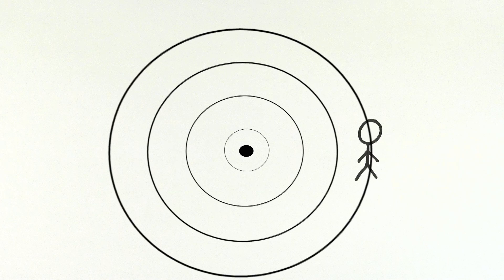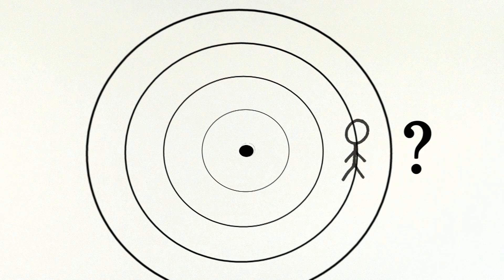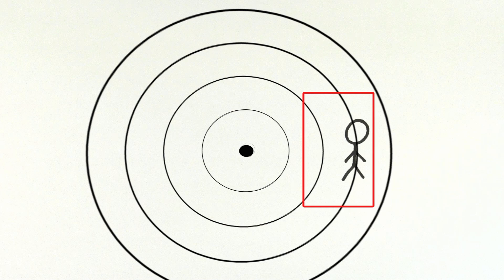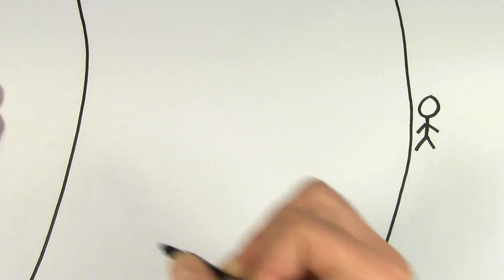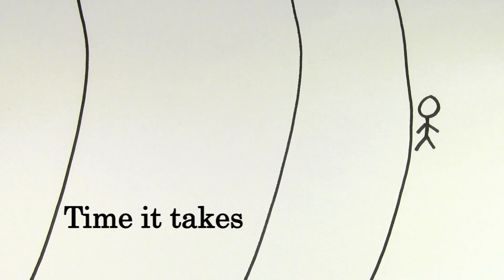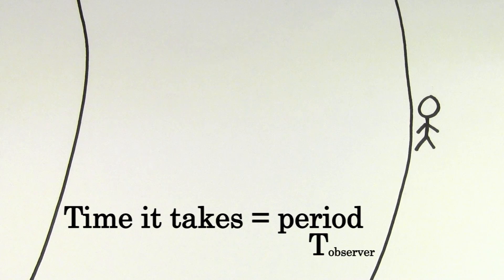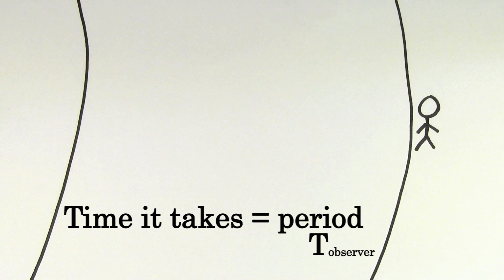But how do we figure out exactly what frequency you'll hear? To find out, let's zoom in on what's going on. Say a wave crest has just made it to your location. The time it takes until another wave crest hits you will be the period that you'll observe, since that will be the time you observe between wave crests. If you're at rest, you'll just have to wait until another wave crest gets to your location, and the period you'd observe would be the actual period of the wave emitted by the speaker.